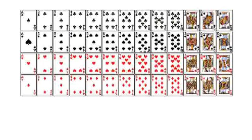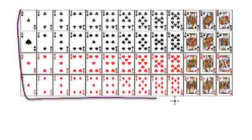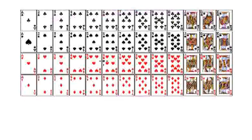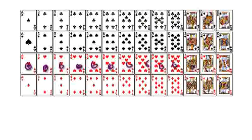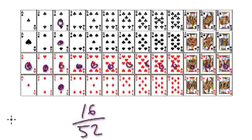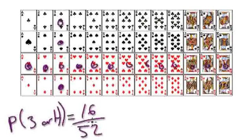If you think about it, this represents a whole packet of playing cards. What cards would give us a good outcome? Counting them out: 1, 2, 3, 4, 5, 6, 7, 8, 9, 10, 11, 12, 13, 14, 15, 16. There are 16 possible good outcomes out of 52. So the probability of getting a three or a heart equals 16 out of 52. Don't count that three twice.